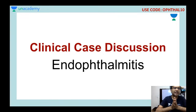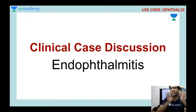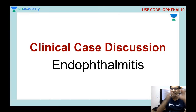This clinical case discussion will be made like a story. I will start where the patient has come to your clinic and you have diagnosed or suspected endophthalmitis. What can be other provisional diagnoses? What can be the differential diagnoses? What is the investigation of choice to see endophthalmitis? And how would you treat this patient — all of this we will discuss today.